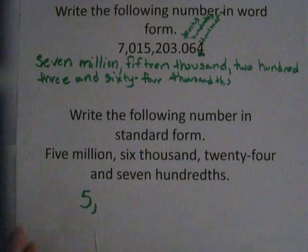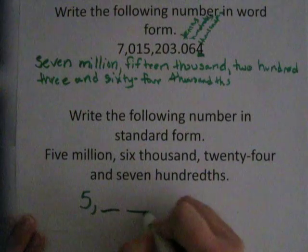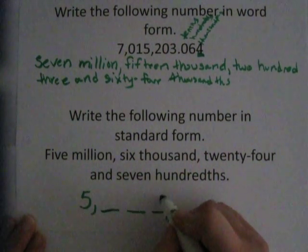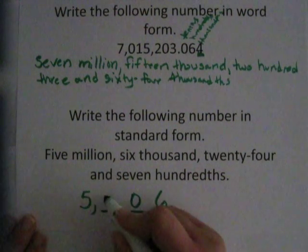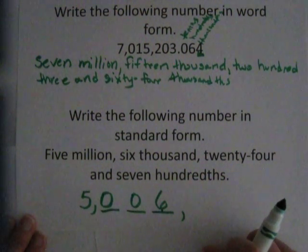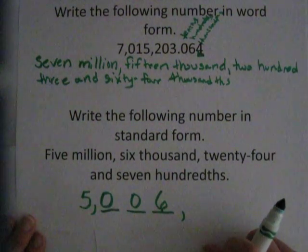six thousand. So in the thousands place, I know I'm going to have three numbers, but I know I want it to read six thousand. So I have to put my six here and put my zeros here. If I were to put my zeros in any other place, it would say a different number than six. And that's not what we want.